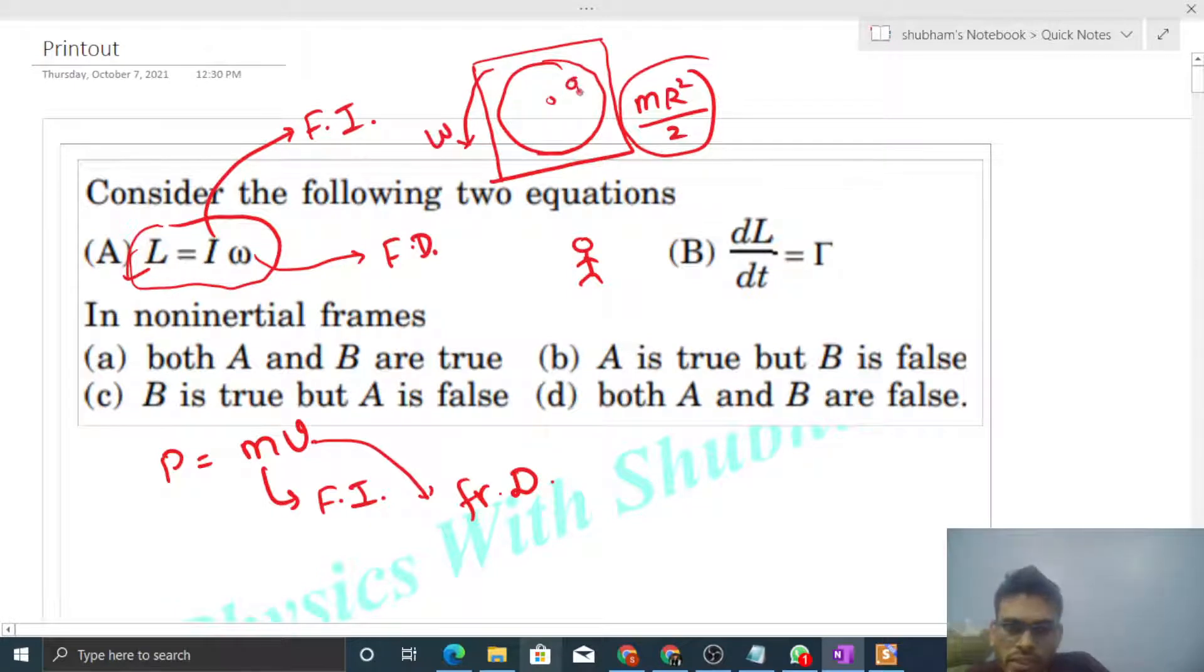Now one person is on the disk. So what happens? The disk is at rest for that person. It means that the omega will be 0. So the omega is frame dependent.